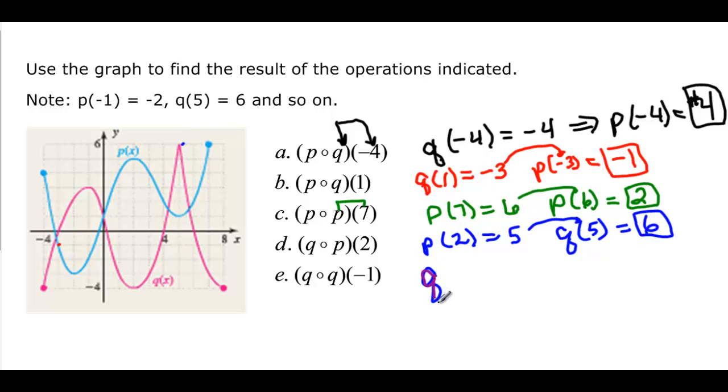Finally, I have q of negative 1, so x is negative 1, q is the pink one, so that's equal to 3, and then I need to do q of 3, because again, this 3 becomes that 3. And q of 1, 2, 3 looks like 1, 2, 3, negative 3.